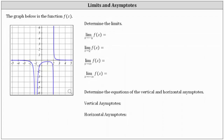The graph below is the function f of x. We're asked to determine the limits and also determine the equations of the vertical and horizontal asymptotes. First, we have the limit of f of x as x approaches negative one.